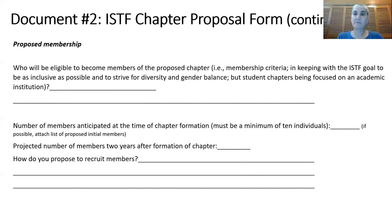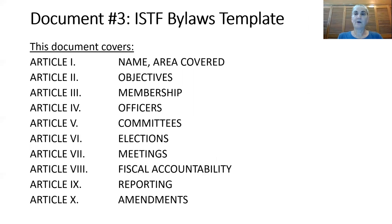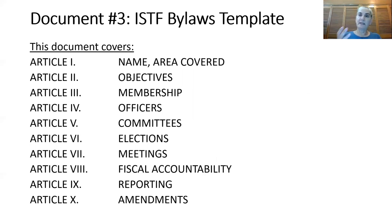Another page covers proposed membership: will it be students, or general membership? How will you recruit members? You go through and keep completing the different sections of the chapter proposal form. When that's finished, you send it on to the ISTF board — they might give you some feedback on it.